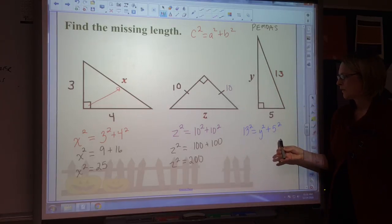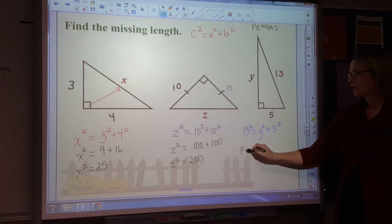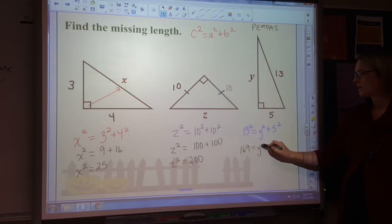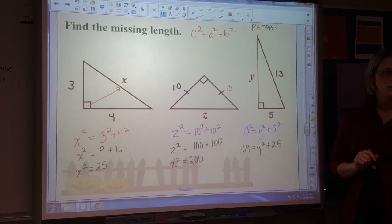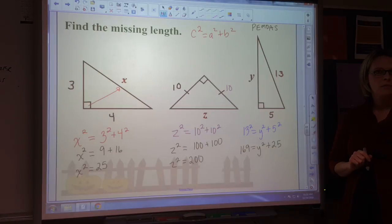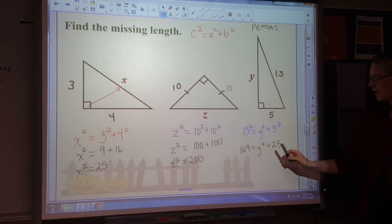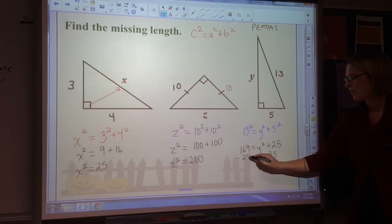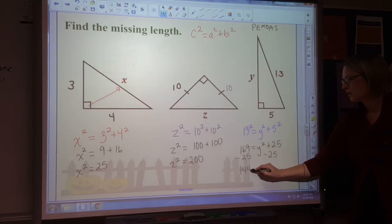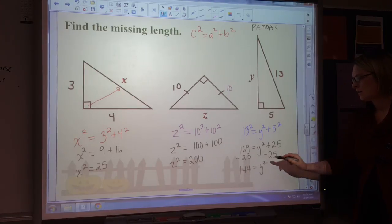And for the third equation: 13 squared is 169, which equals Y squared plus 25. Just like you usually solve for a variable, I'm going to get Y squared alone by subtracting 25 from both sides, and I get 144 equals Y squared.